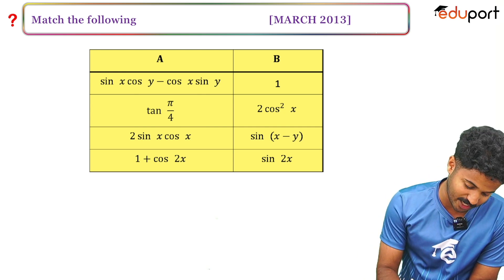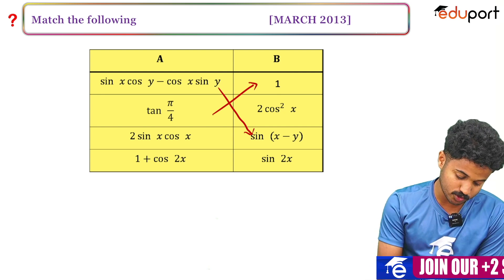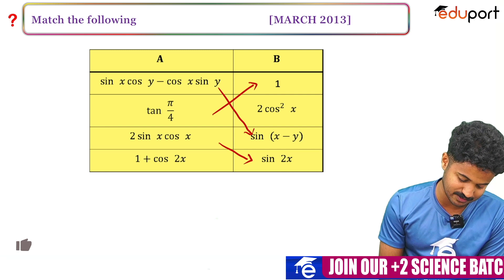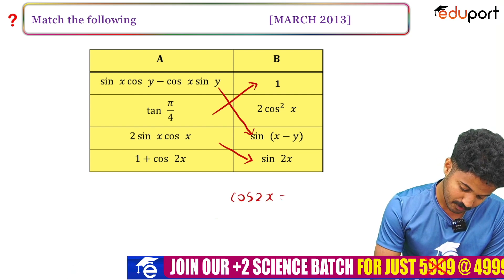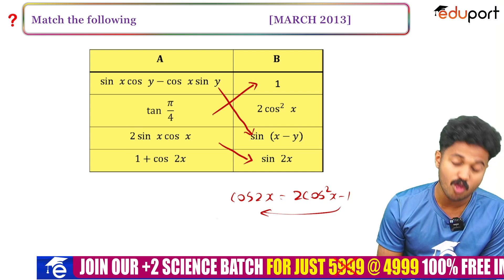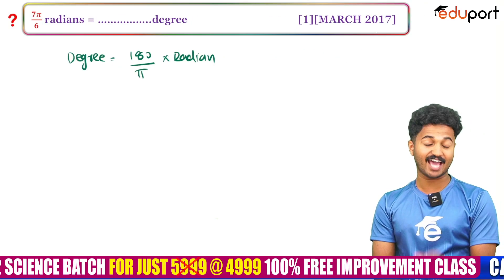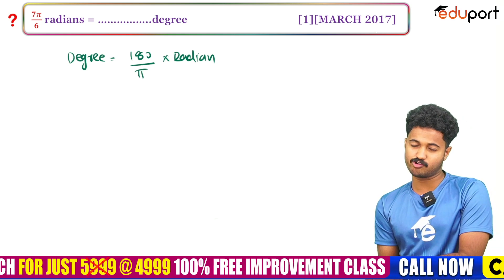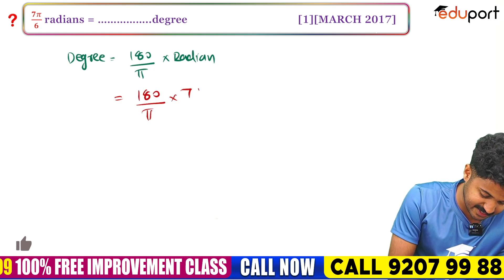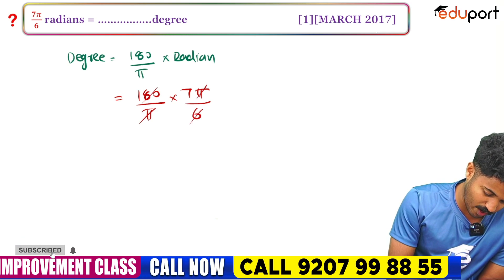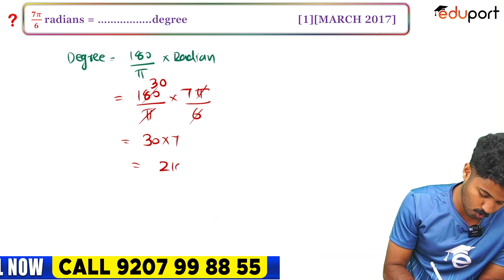We also verify that sin(x−y) = sinx·cosy − cosx·siny, and that tan(5π/4) equals tan(45°). Now for 7π/6 radians converted to degrees: multiply by 180/π, so 7 × (180/6) = 7 × 30 = 210 degrees.